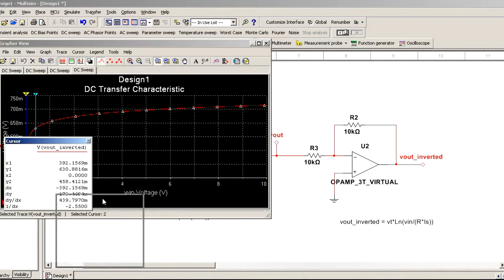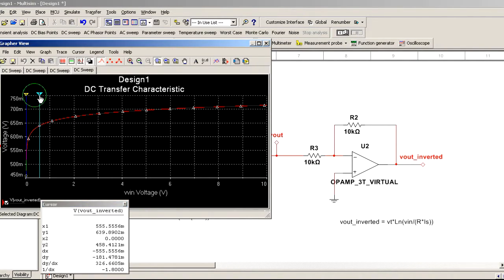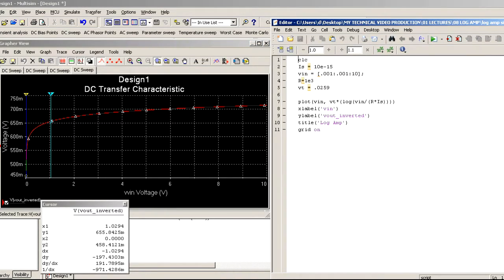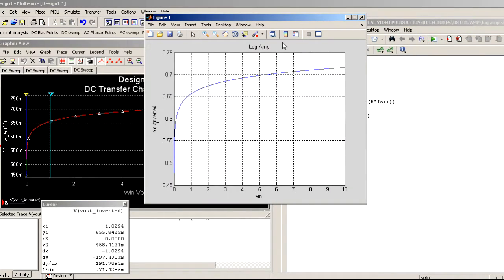I'll use cursor 1. And I'll place cursor 1 someplace like about 1 volt. Try to get it there. I have to use the mouse to slide this along. So about 1 volt. 1.02 volts. And then I'll go ahead and take a look at our mathematical expression here. And I'll enable cursor here as well.